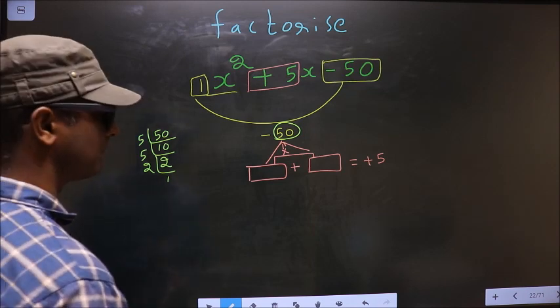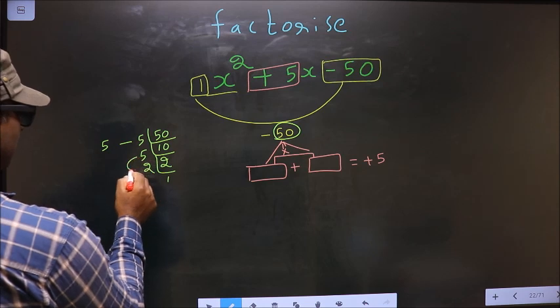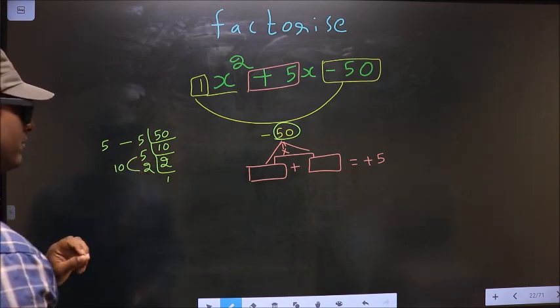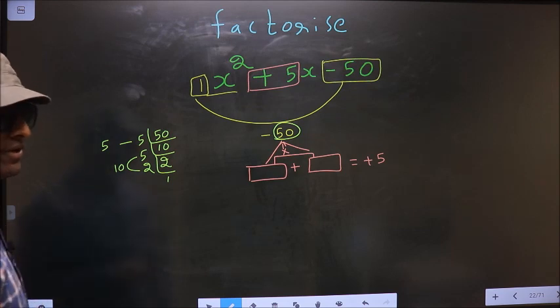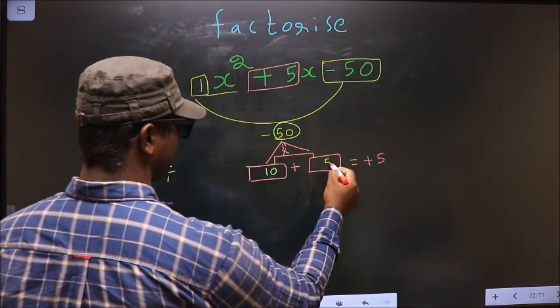The two numbers should be: one number is 5 and the second number is 5 × 2, which is 10. 10 × 5 is 50. 10 - 5 is 5. So here I write 10 and here I write 5.